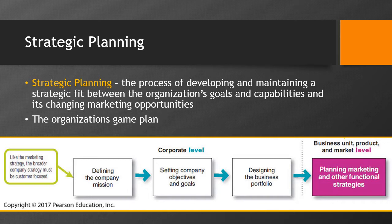Each business and product develops detailed marketing plans that support the company's overall plan. Marketing planning occurs at the business unit level, the product level, and the market level. It supports a company's strategic plans with more detailed plans for specific marketing opportunities.